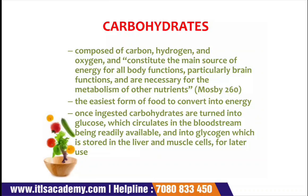Once ingested, carbohydrates are turned into glucose, which circulates in the bloodstream, and into glycogen, which is stored in the liver and muscle cells for later use. After consuming carbohydrates, they convert into energy in the form of glucose, which circulates in the bloodstream, and is also deposited as glycogen in the liver and muscle cells.